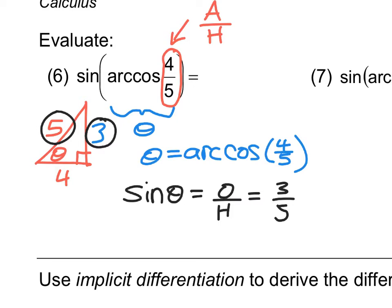The sine of that triangle, opposite over hypotenuse, three-fifths, directly means the sine of the arc cosine of four-fifths. So without using a calculator, the appropriate ratio is three over five. You could also type sine of arc cosine of four-fifths into a calculator and it will spit out 0.6, which is three-fifths.